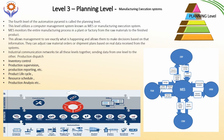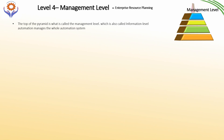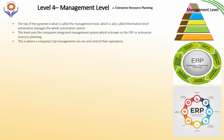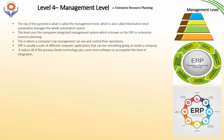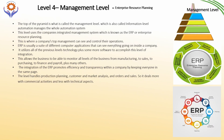The top level of the pyramid is the management level, also called the Enterprise Resource Planning or ERP level. At this level, the company's top management can see and control the complete operation. ERP is used with different computer applications such as SAP, CRM, inventory management, human resources, production planning, finance and accounting, and sales and marketing. This level handles production planning, customer and marketing analysis, orders, and commercial activities, and is where managers make decisions for the complete business.